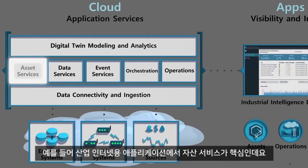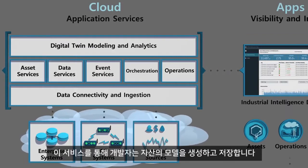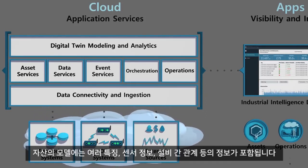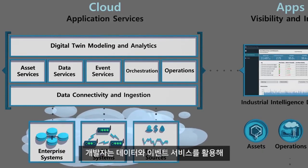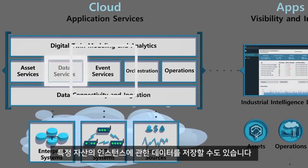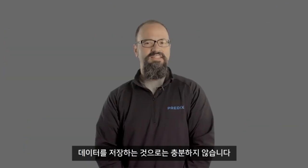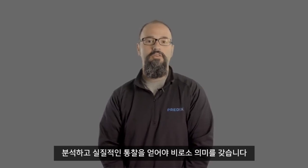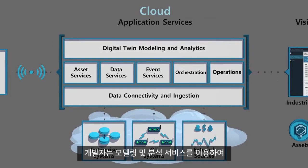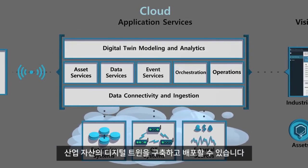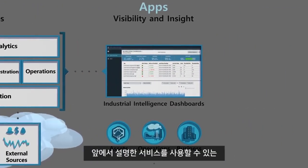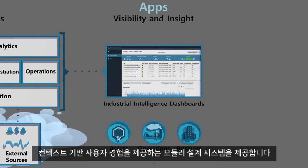For example, the asset service is at the center of all industrial internet applications. The service lets developers create and store models of assets, including the properties, sensor information, and relationships between those assets. Developers can store data about specific asset instances using the data and event services. The modeling and analytics services help developers build and deploy digital twins of industrial assets. Industrial intelligent dashboards provide developers with a UI mobile application framework, as well as a modular design system that provides a context-driven user experience.